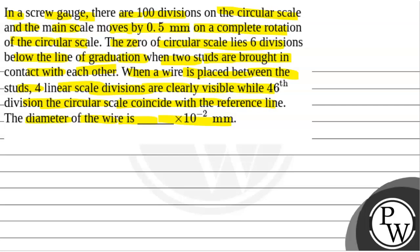We will solve this question. First of all, we will see what will be the key concept used to solve this question. The key concept is that the diameter of the wire will be given by: diameter of wire = screw gauge reading minus zero error.